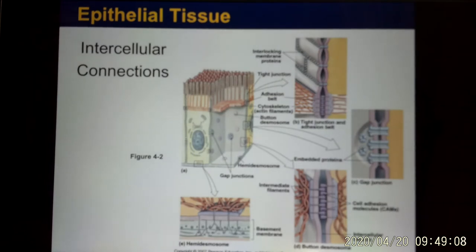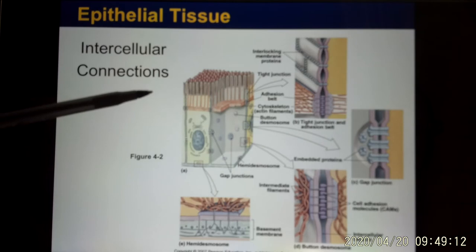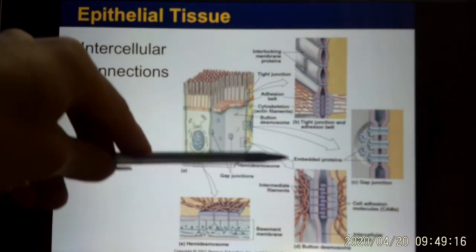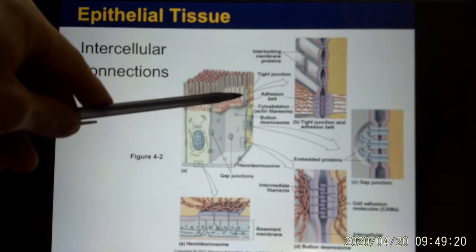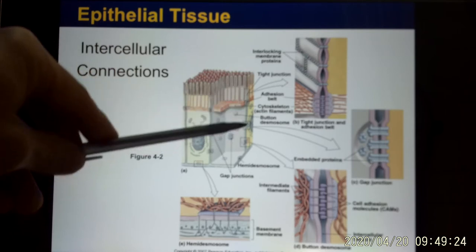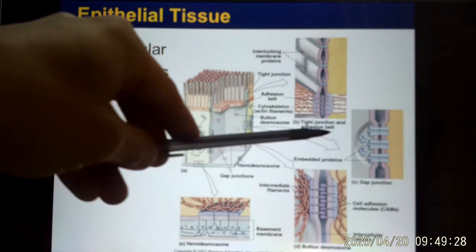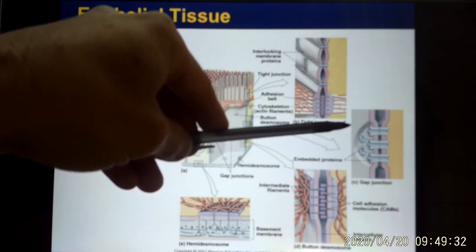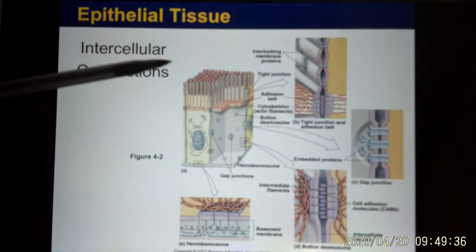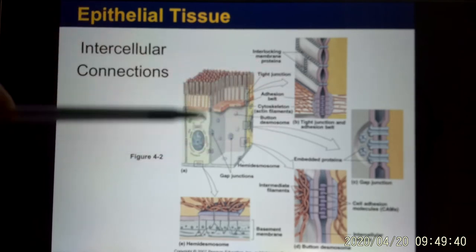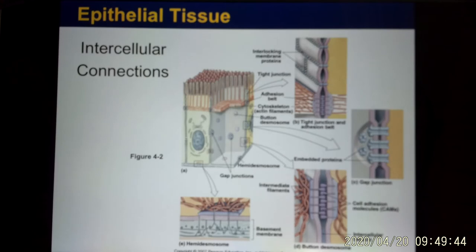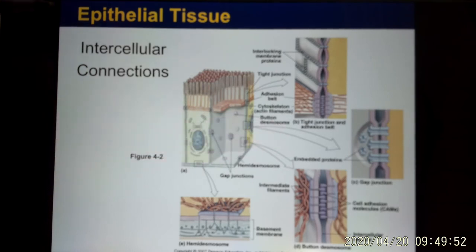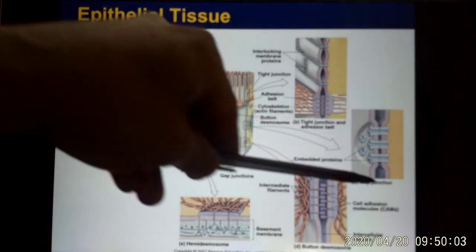The main function of junctions is to glue cells together. Desmosomes are deep and glue cells together. Tight junctions are on the surface and create no leakage, preventing bacteria from entering. Gap junctions act like ion channels, letting ions pass from cell 1 to cell 2 to cell 3. In heart muscle, electrical signals travel through gap junctions so the whole heart works like one cell — which is why EKG signals can sum together.